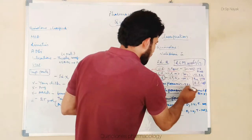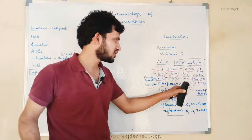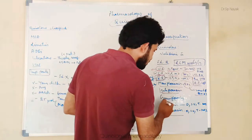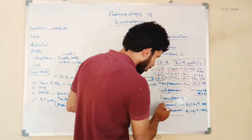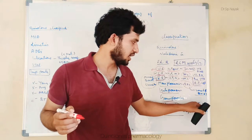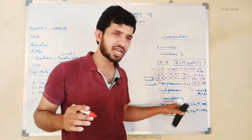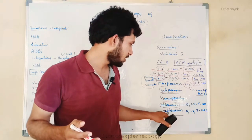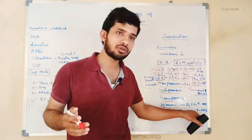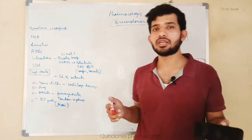Moxifloxacin has a bioavailability of 90% and its mechanism and uses are the same as ciprofloxacin and levofloxacin. We also have gatifloxacin and gemifloxacin. Ofloxacin is available as oral, IV, and topical form, with a bioavailability of 100% and the same uses as ciprofloxacin. Pefloxacin is also available as oral, IV, and topical route, with a bioavailability of 100% and the same actions as ciprofloxacin.